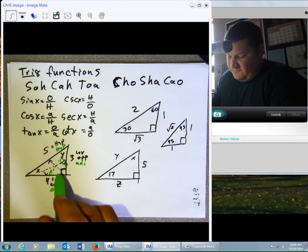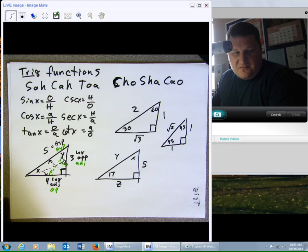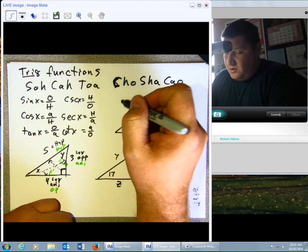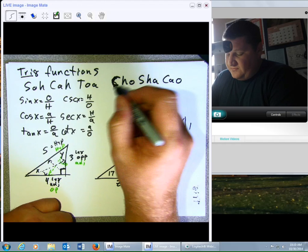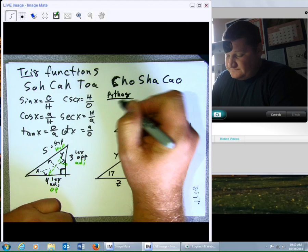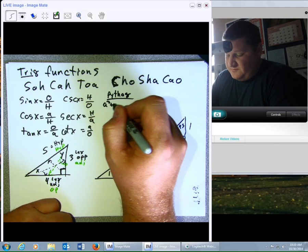So opposite and adjacent are determined by which angle you're talking about. You're never going to talk about anything across from the 90 except the hypotenuse. And again, if you don't have a 90, you don't have a hypotenuse. Now, we already know one big theorem for dealing with triangles, and that is the Pythagorean theorem.